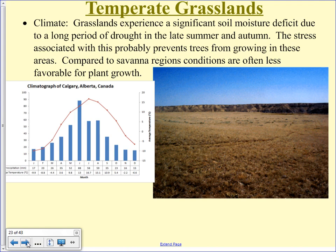Grasslands experience significant soil moisture deficit due to a long period of drought in late summer and early autumn. Here the rains come in June and July, then August, September, and October are pretty dry. The typical climatogram for a prairie — this is Calgary — shows a bell curve because we're quite far from the equator, with June as the wettest month. A lot of times people look at all the snow and think we get a lot of moisture, but snow is not nearly as much water as rain — 10 centimeters of snow is equivalent to about 1 centimeter of rain because snow is so much air.